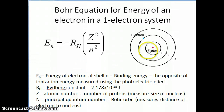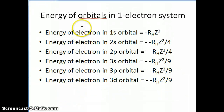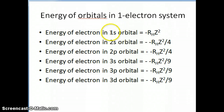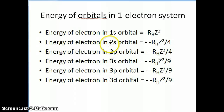Now let's think about how to calculate the energy of various orbitals using this equation. We have our 1s orbital — that's the lowest we can have in terms of the principal quantum number, which starts from 1. When we go to principal quantum number 2, we can have either 2s or 2p. And when we go to level 3, principal quantum number 3, we can have either 3s, 3p, or 3d orbital.